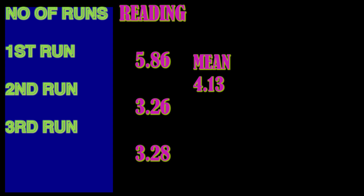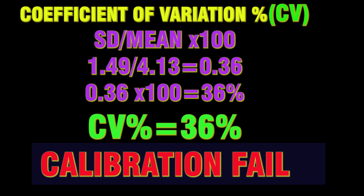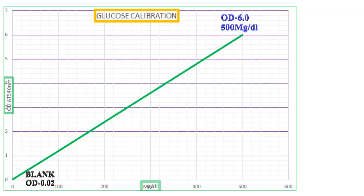The other example has three values: 5.86, 3.26, and 3.28. The SD value is 1.49 and the mean is 4.13, giving a coefficient of variation percentage of 36%, which is very high. Most of the time, more than 25% coefficient of variation will cause calibration to fail, and we need to fix the instrument problem before running the recalibration.